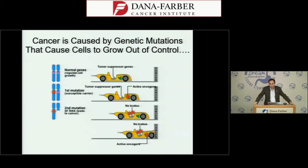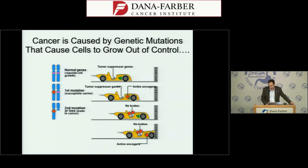A simple way to think about cancer is like a car: every cell has gas pedals and brakes — parts that make the cell grow and parts that slow things down. In cancer, there's aberrant activation of growth-promoting genes (the gas pedals) and inactivation of the growth-slowing genes (the brakes). Cutting the brakes and flooring the gas pedal simultaneously can obviously be catastrophic.